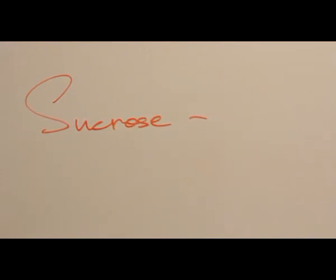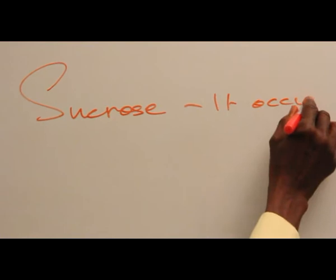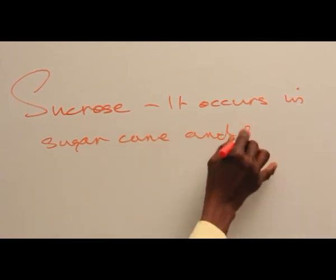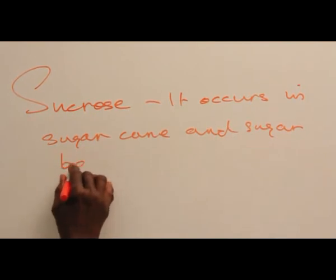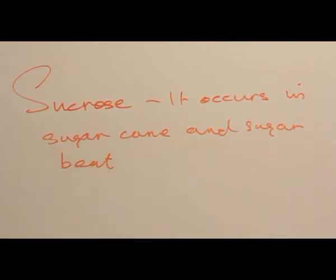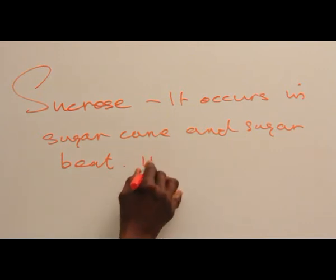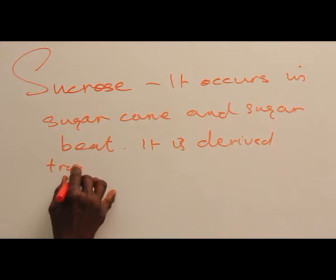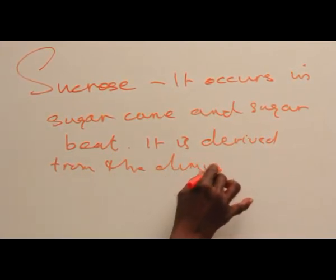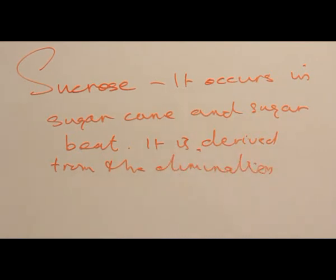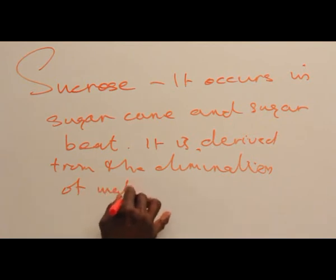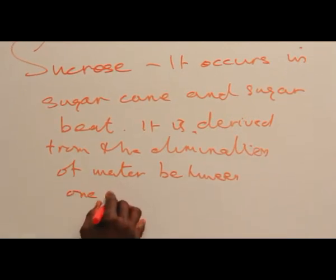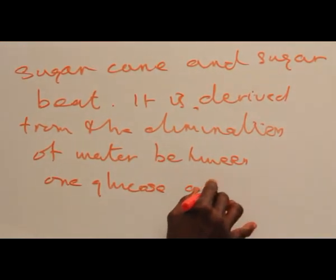It occurs in sugar cane and sugar beet. It is derived from the elimination of water between one glucose and one sucrose molecule.